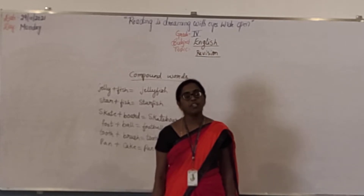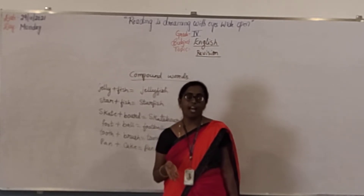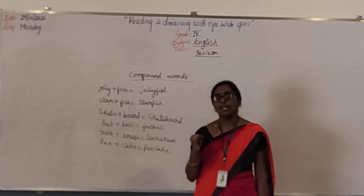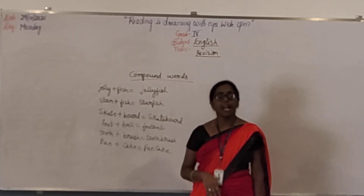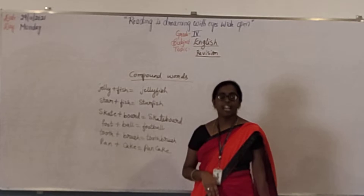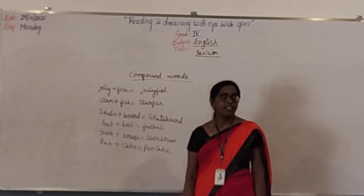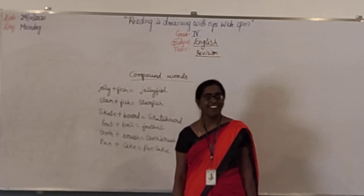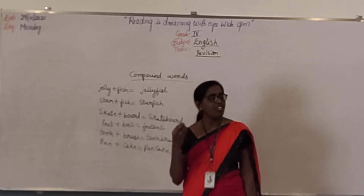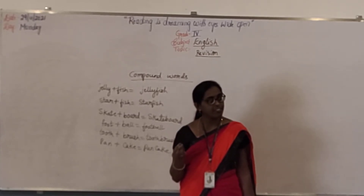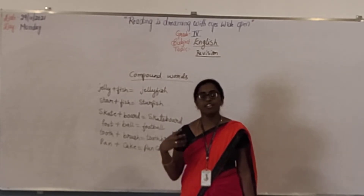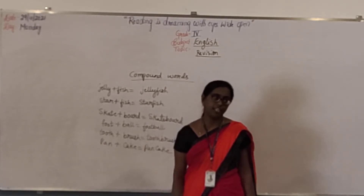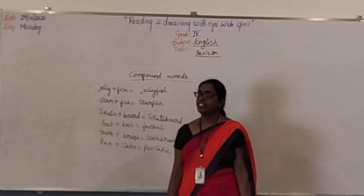But uncountable nouns are like sugar, water, milk, salt, sand — we cannot count those. Stars we cannot count. And garlic also — it is the unseen thing, just we can see it. Understand each other?